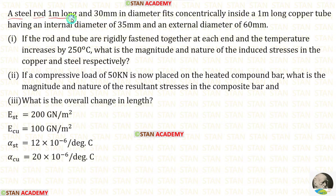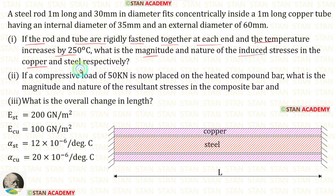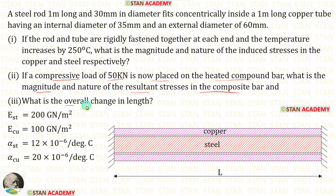A steel rod 1 meter long and 30 mm in diameter fits concentrically inside a 1 meter long copper tube having an internal diameter of 35 mm and external diameter of 60 mm. If the rod and tube are rigidly fastened together at each end and the temperature increases by 250 degrees Celsius, what is the magnitude and nature of the induced stresses in the copper and steel respectively? If a compressive load of 50 kN is now placed on the heated compound bar, what is the magnitude and nature of the resultant stresses? And finally we have to calculate the overall change in length.